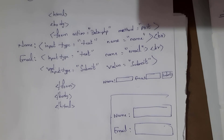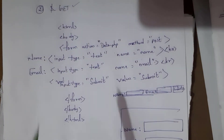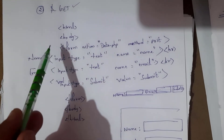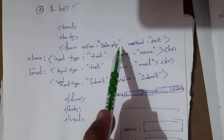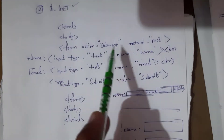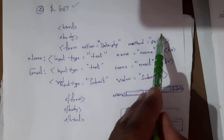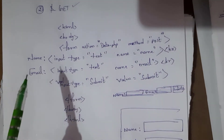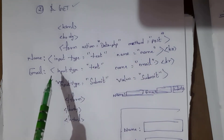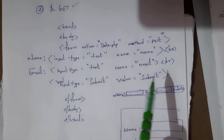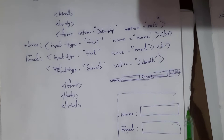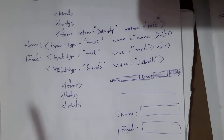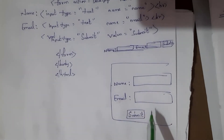This is the HTML file. Inside the file, I create the form using the form tag, include data.php in the form action, and use method as post. The input type is text with name 'name', and similarly for email with input type text and name 'email'. By entering these two tags, the name and email fields are created. The last one is input type submit with value submit, so the submit button is created.